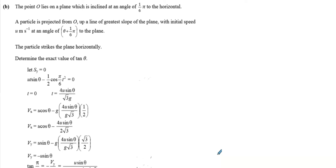The Dec 2018 paper, question 3b. The particle is projected from a point up a line of greatest slope of the plane with initial speed u at an angle. This is actually wrong — you can see in the marking scheme they completely go back on it, so it's just an angle of theta to the plane.